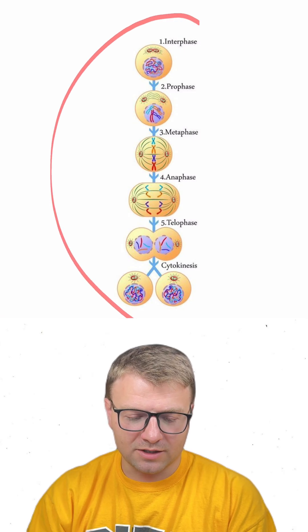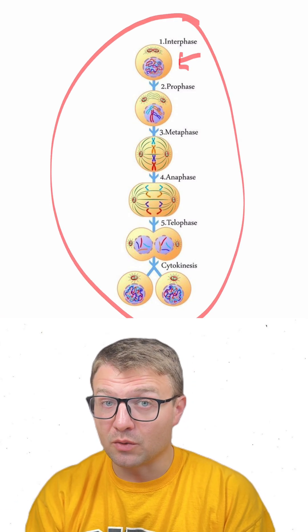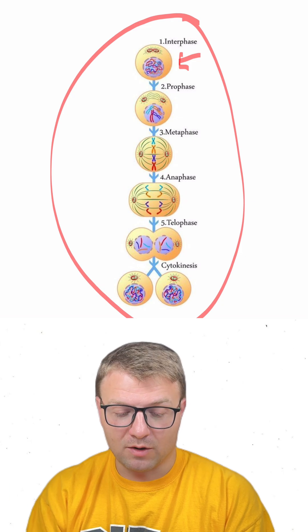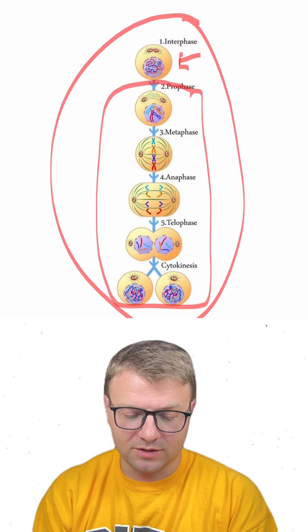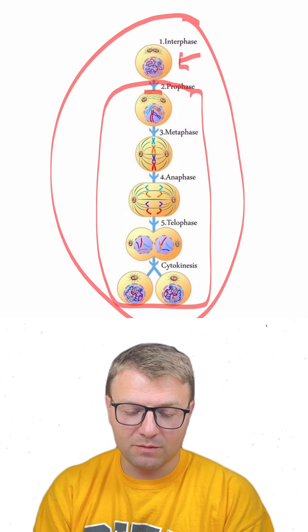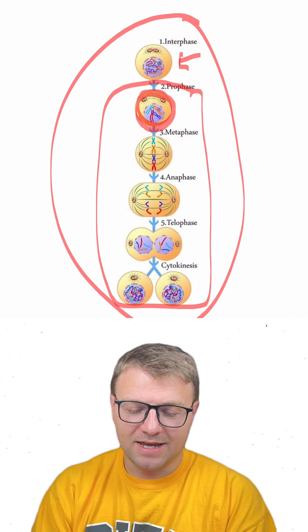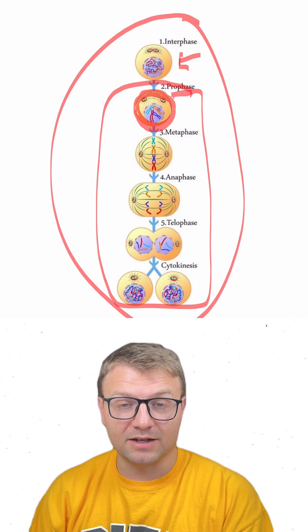So we can see here in our diagram, we have interphase and it's not really showing S phase or DNA replication. However, it is showing the process of mitosis, and we can see that the chromosomes first condense in this first phase known as prophase.